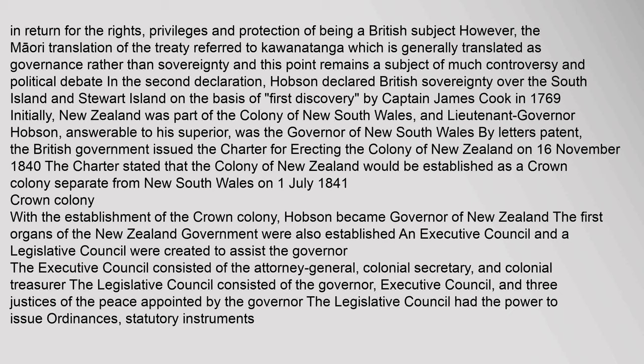With the establishment of the Crown Colony, Hobson became Governor of New Zealand. The first organs of the New Zealand government were also established. An Executive Council and a Legislative Council were created to assist the Governor. The Executive Council consisted of the Attorney General, Colonial Secretary, and Colonial Treasurer. The Legislative Council consisted of the Governor, Executive Council, and three Justices of the Peace appointed by the Governor.